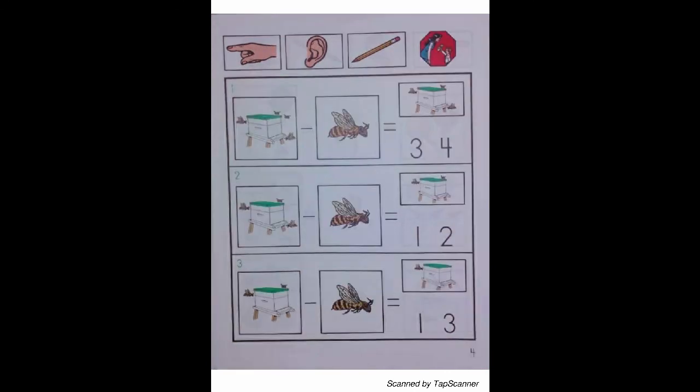Page 4, separating sets. Put your finger on row 1. Listen carefully. First, there are 4 bees. Then, 1 bee flies away. There are 3 bees left. 4 bees minus or take away 1 bee equals 3 bees. With your pencil, circle around the correct number. Continue steps B, C, and D, making appropriate changes in wording for the other rows.